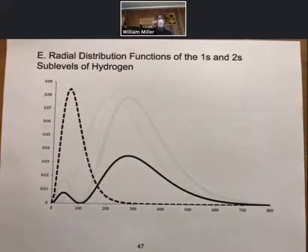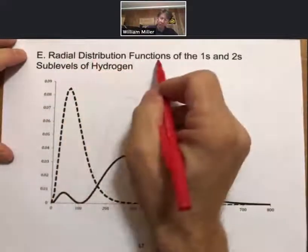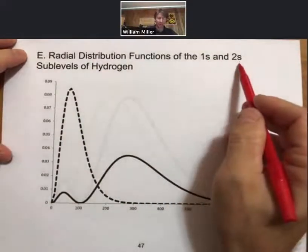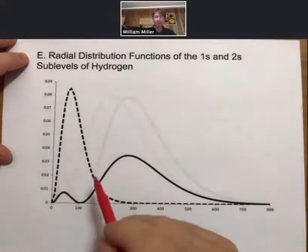Now let's have some more coffee and get a little up close and personal with the radial distribution functions. First we're going to look at the 1s and 2s sublevels of hydrogen, and so these are also orbitals.